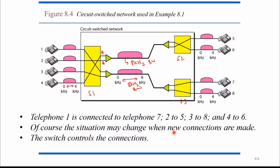The situation may change when new connections are made. If new devices connect at the center side, other switches will be required, so the connection may vary. The switch controls the connection — if one wants to connect with five instead of seven, the internal connection changes accordingly. Based on the desired connection, the switches decide and search for a direct path between the source and the destination. Switches are responsible for controlling the connections.